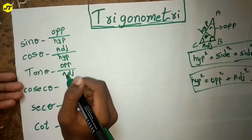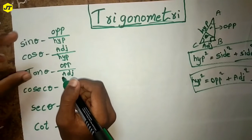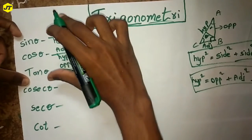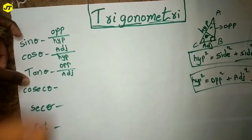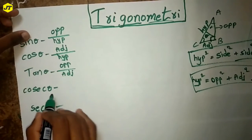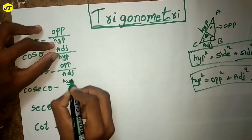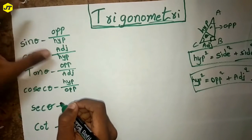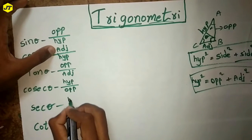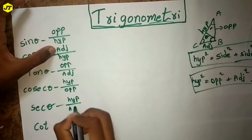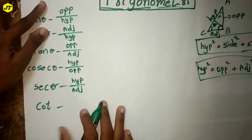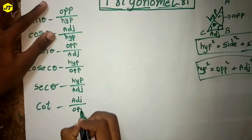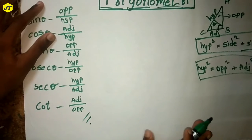Cosecant theta is 1 by sine theta. The first three ratios are the most important. The rest are reciprocals: cosecant theta is the reciprocal of sine theta, which gives hypotenuse by opposite. Secant theta is the reciprocal of cos theta, giving hypotenuse by adjacent. Cot theta is the reciprocal of tan theta, giving adjacent by opposite. These are the six trigonometric ratios in this chapter.